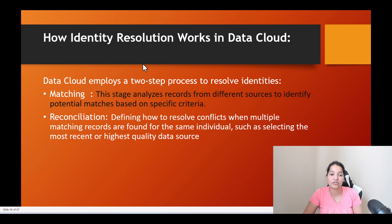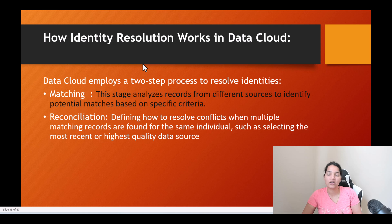So what are matching rules? This stage analyzes the records from different sources to identify potential matches based on specific criteria. You can say that if there is an exact match on the name, that means we are talking about the same individual. You can do fuzzy matches as well. In matching rules you define whether it is an exact match or a fuzzy match, and based on that you figure out that these are contacts that might be pointing to the same individual. Rather than having duplicate records, we should consolidate them and create a single profile for every customer.